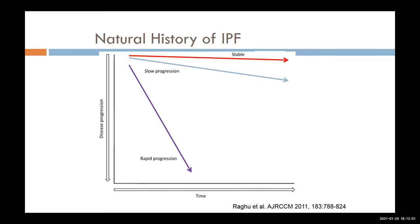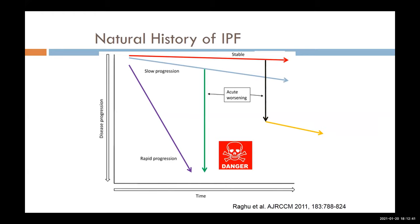How IPF behaves over time is really quite unpredictable. Some patients, like the red line, take a relatively stable path — they get worse, but very slowly. The blue line shows people who progress slowly over time, and the purple line shows people who progress really quickly. But patients don't necessarily stay in their lane. Some people who are relatively stable suddenly have an acute worsening, may stabilize but not gain back the lung they lost. Others have a flare where they get progressively worse and can even die during these flares of IPF. For every single patient, their experience is very different.